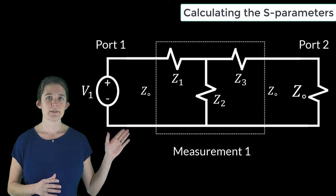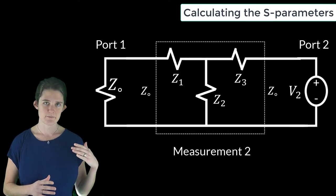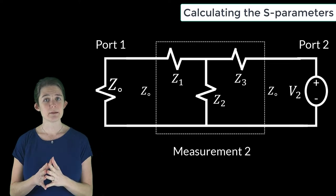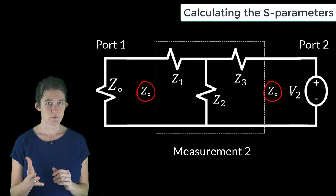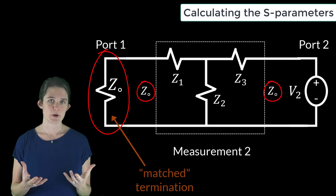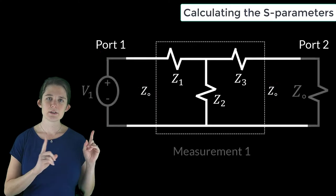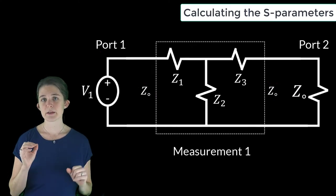The second will involve a test voltage on the right and a matched termination on the left. Since both ports have the same characteristic impedance Z0, a matched termination at either end can be achieved by loading that port with a resistor equal to Z0. So here's the first measurement setup.